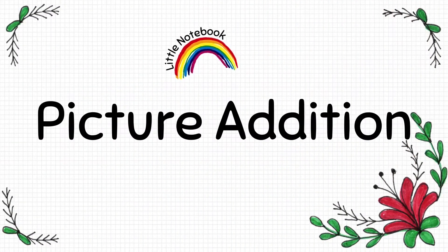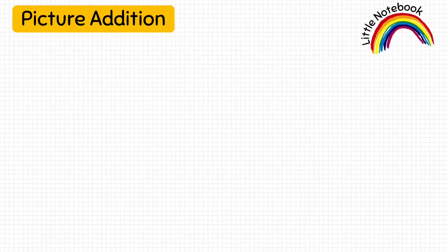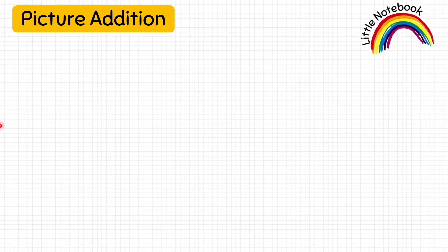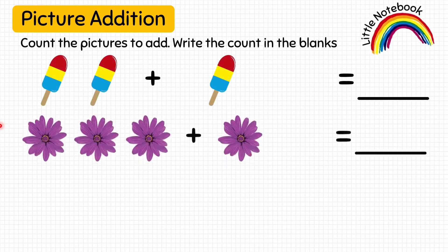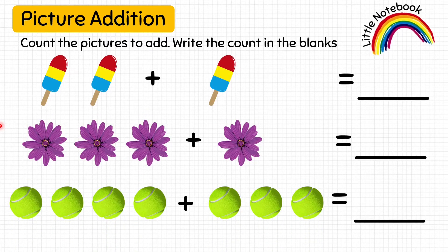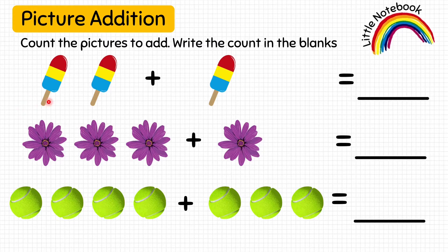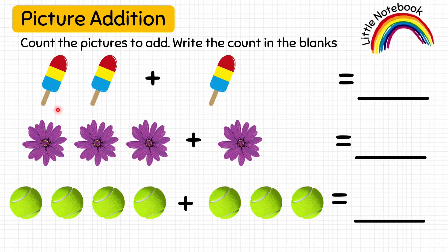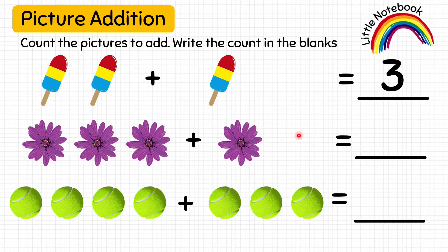The first worksheet is picture addition. Before going into number addition, we will first do picture addition to learn the concept of addition easily. Kids, you have to count the pictures and then write that count in the blanks. We are given some pictures, addition symbols, and equal to symbols. The first picture is of ice creams — two ice creams plus one ice cream equals how many ice creams? Let's count: one, two, three. Write three in the blank.